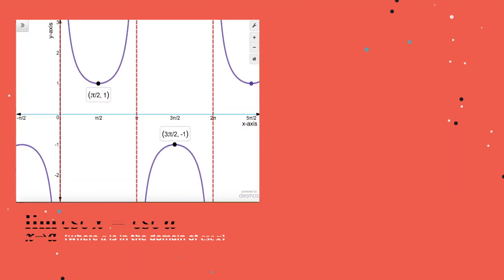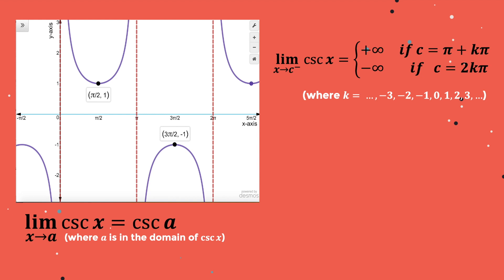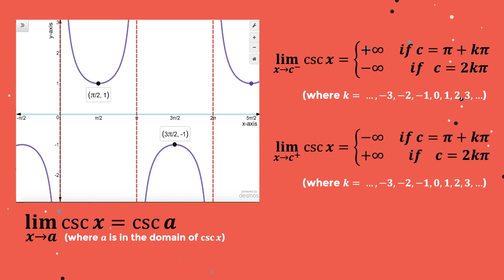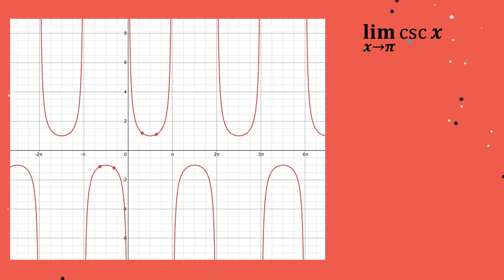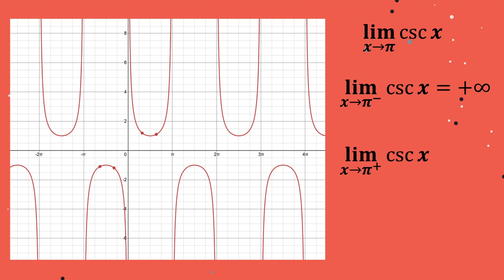The limit of cosecant x as x approaches a is equal to cosecant a, where a is in the domain of cosecant x. Here's the limit of cosecant x as x approaches c from the left and as x approaches c from the right. Let's find the limit of cosecant x as x approaches pi. Since pi is not in the domain of cosecant x, we have to analyze its left-hand and right-hand limit. As x approaches pi from the left, the graph goes upward infinitely, so its left-hand limit is equal to positive infinity. On the other hand, as x approaches pi from the right, the graph goes downward infinitely, so its right-hand limit is equal to negative infinity. Since the left-hand limit is not equal to the right-hand limit, the limit of cosecant x as x approaches pi does not exist.